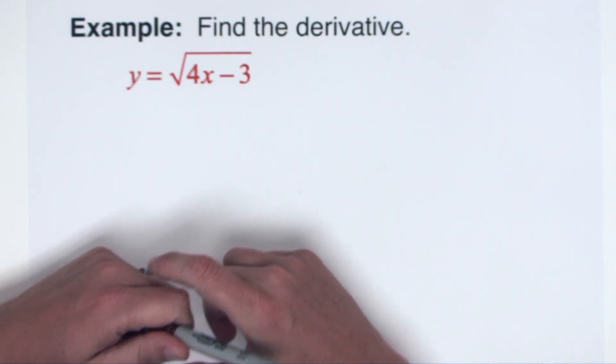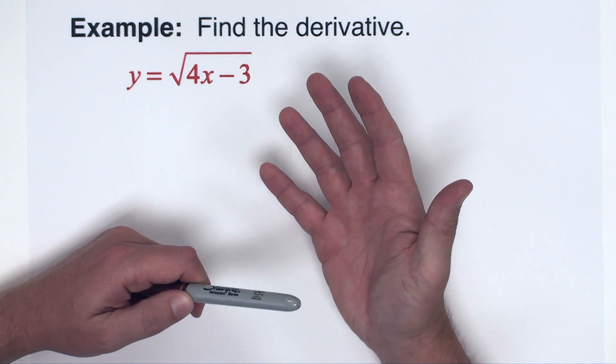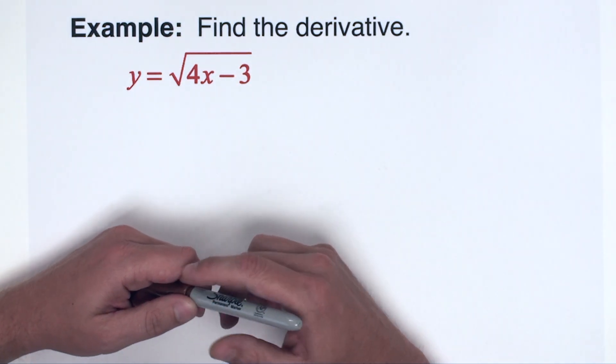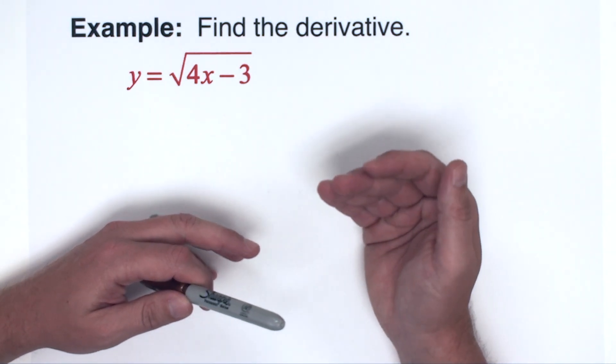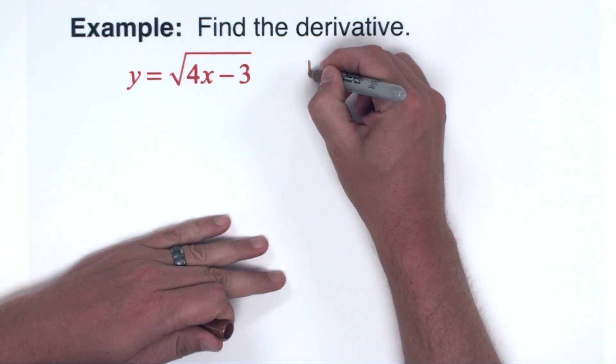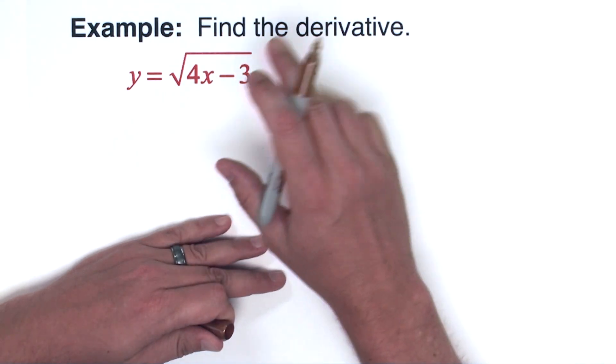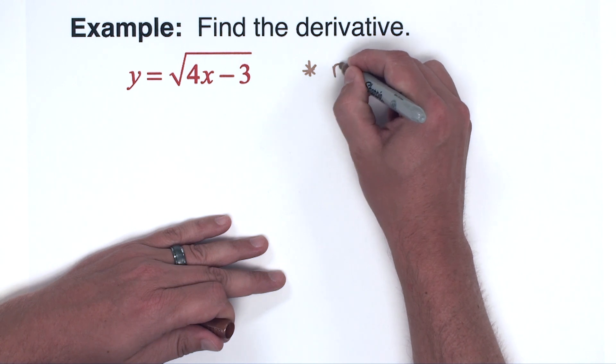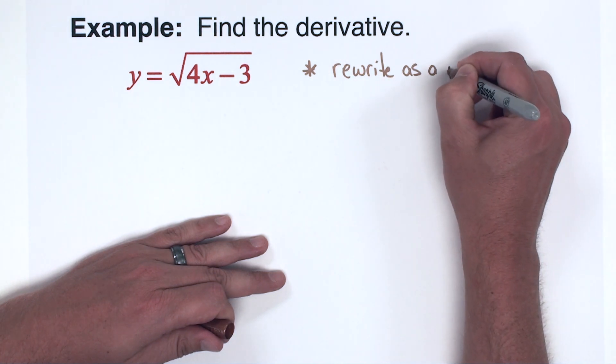Okay, the first example we have y equals the square root of 4x minus 3. I want to take the derivative of this. It is going to require chain rule and you might be asking, well where's the power, right? Well the very first thing you should do with any radical function is you want to rewrite as a power first.